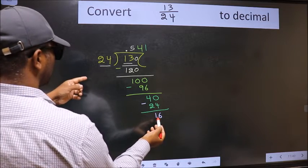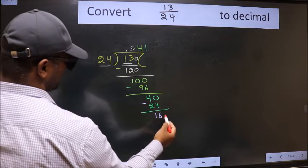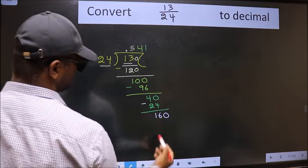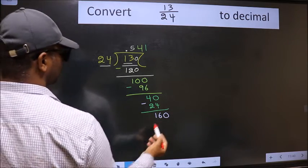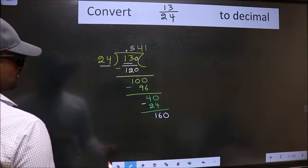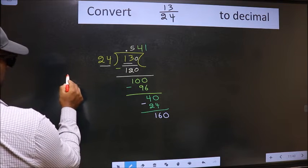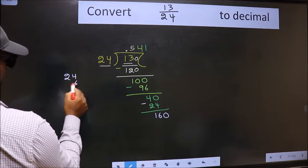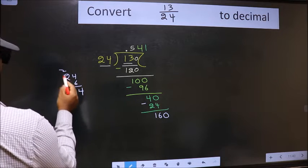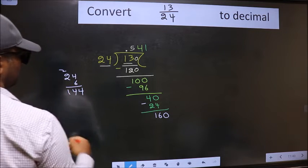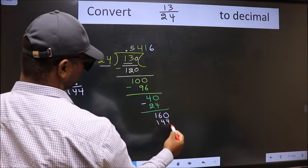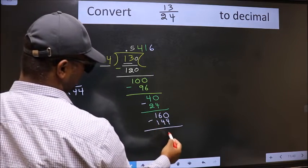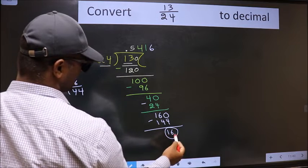16 is smaller than 24 and we already have the decimal, so directly take 0 to make 160. A number close to 160 in the 24 table is... let us check with 6. 6 times 24: 6 times 2 is 12, we get 144. So 24 times 6 equals 144. Now we should subtract. We got 16 again.